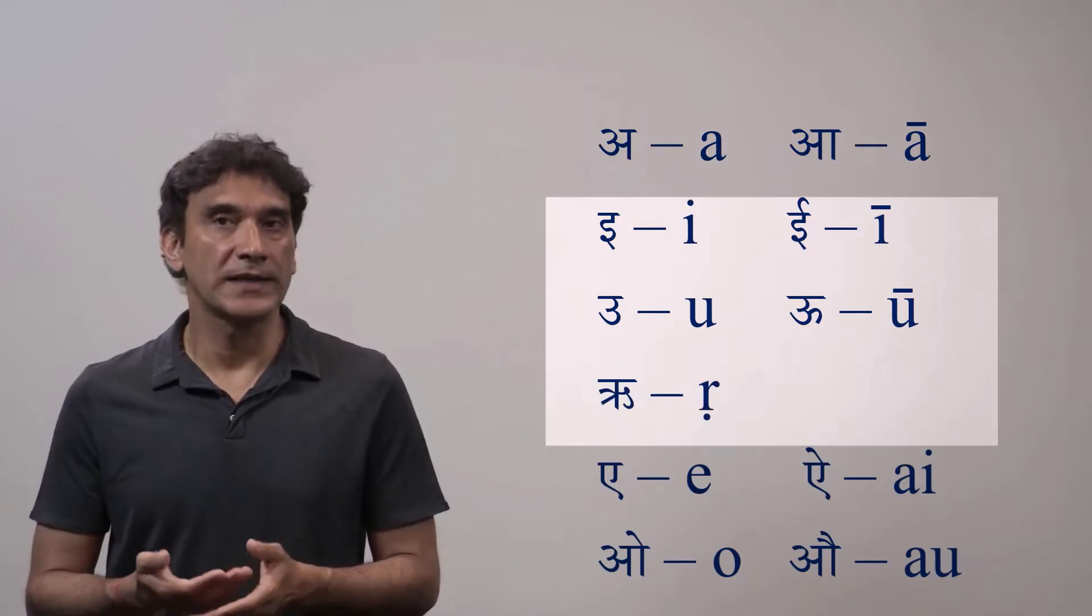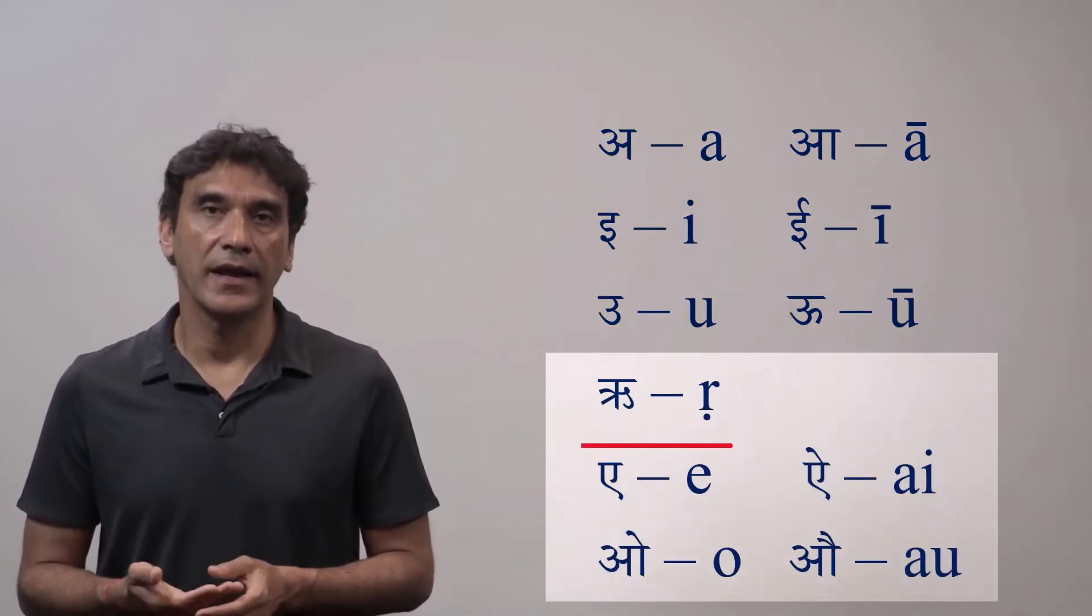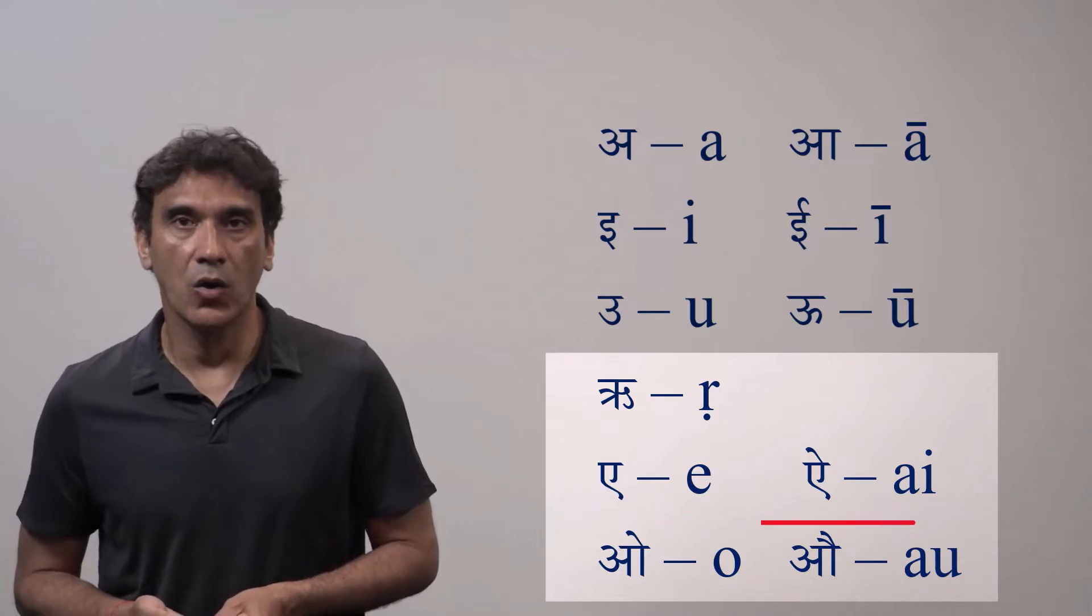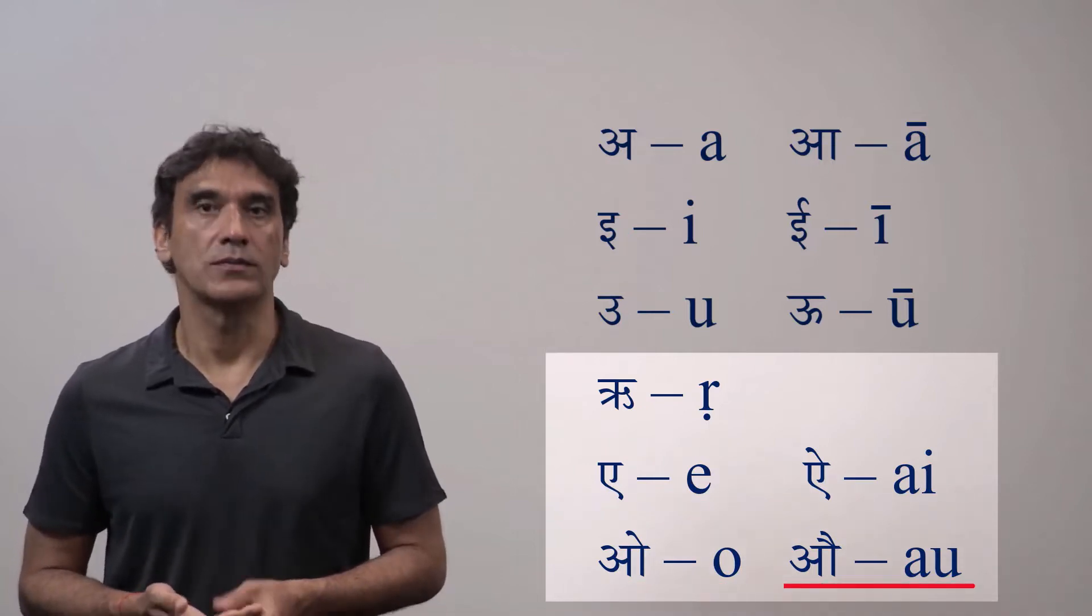In this video we'll take the remaining vowels ri, e, ai, o and au. So let's start.